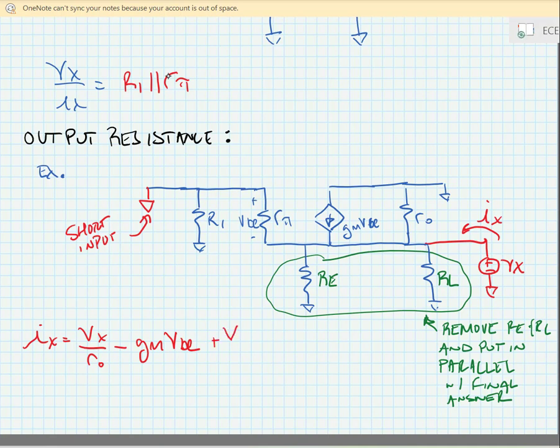Now, we note here that Vb is grounded, so Vbe is simply equal to minus Vx as there are multiple sources tied to the other node.